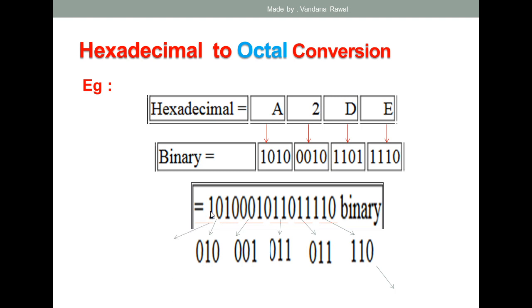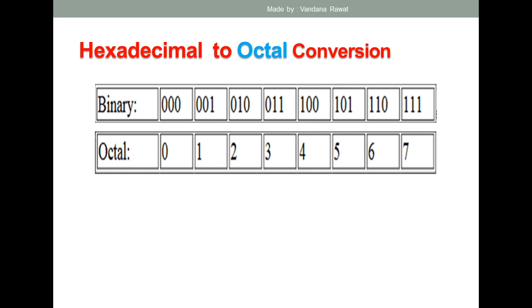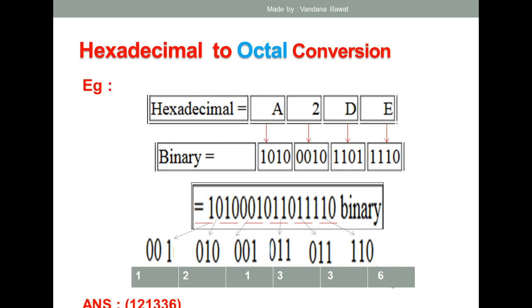Only one digit is left on the MSB side, so you add two zeros to make a complete set of three. Now each set of three binary digits is converted to octal using the table: 001 equals 1, 010 equals 2, 001 equals 1, 011 equals 3, 011 equals 3, and 110 equals 6. So the octal equivalent of this hexadecimal number is 121336.